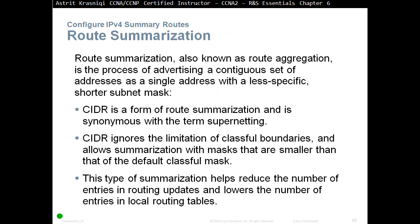Route Summarization, also known as Route Aggregation, is a process of advertising a contiguous set of addresses as a single address with a less specific, shorter subnet mask. Classless Inter-Domain Routing (CIDR) is a form of route summarization, synonym with the term supernetting. CIDR ignores the limitation of classful boundaries and allows summarization with masks smaller than the default classful mask. This helps reduce the number of entries in routing updates and lowers the number of entries in the local routing table.